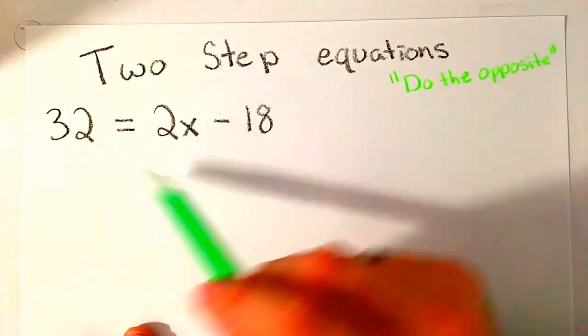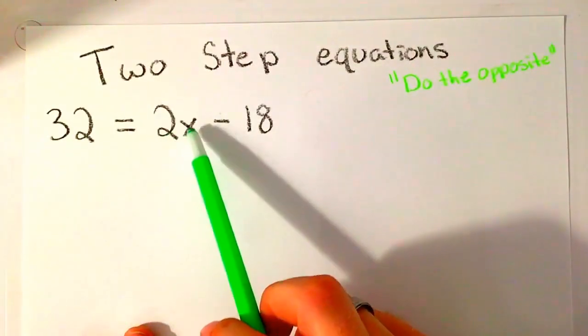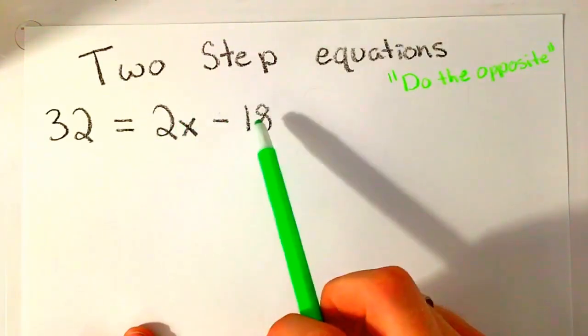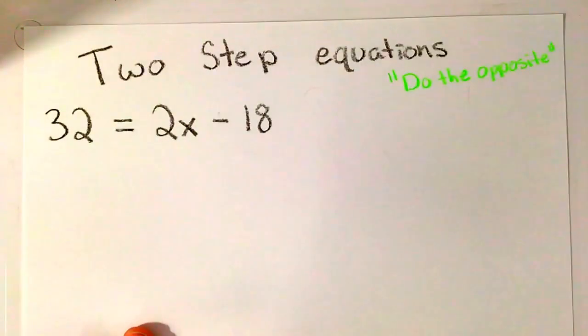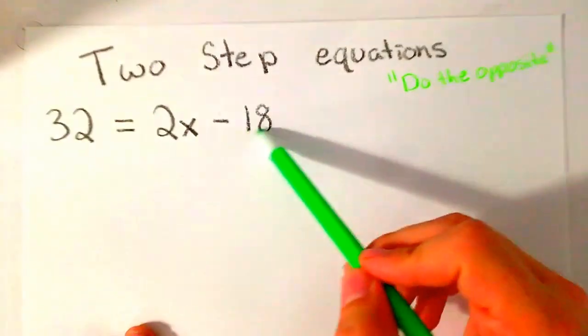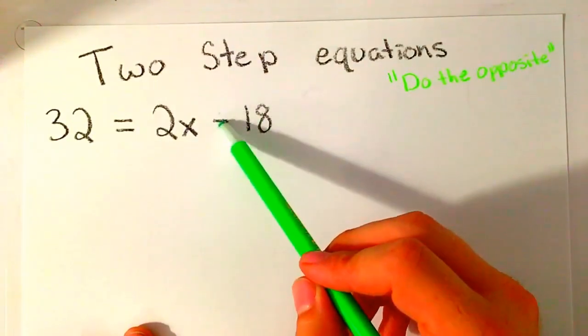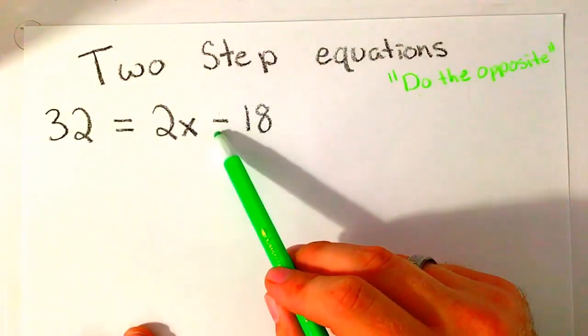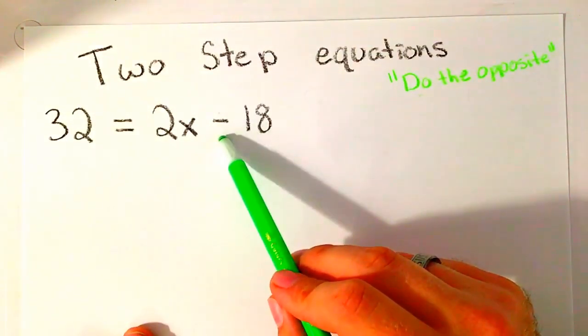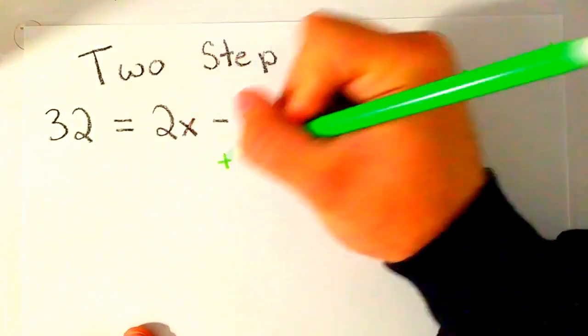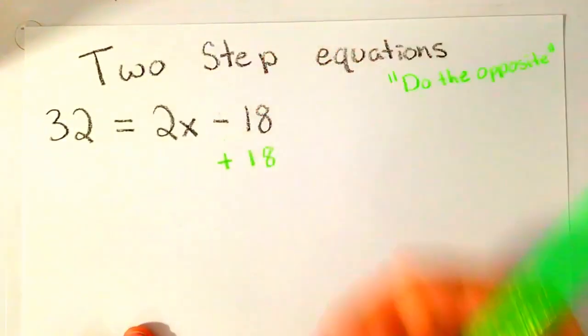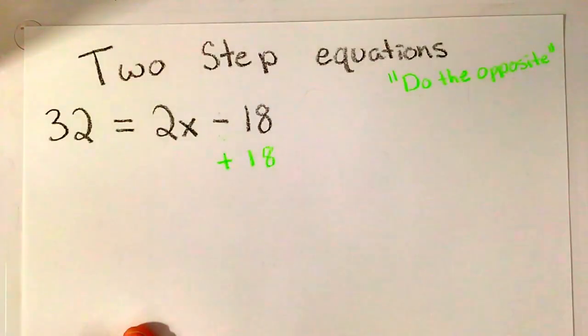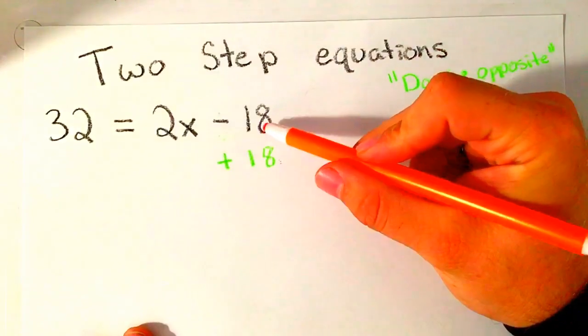When we look at this, we would normally multiply 2 times some number, then subtract 18. That's the normal order of operations. But because we're doing it in reverse, we're going to start with this subtraction. We need to do the inverse operation of subtraction. What is the opposite of subtraction? We are going to add 18. So we just did an inverse operation.